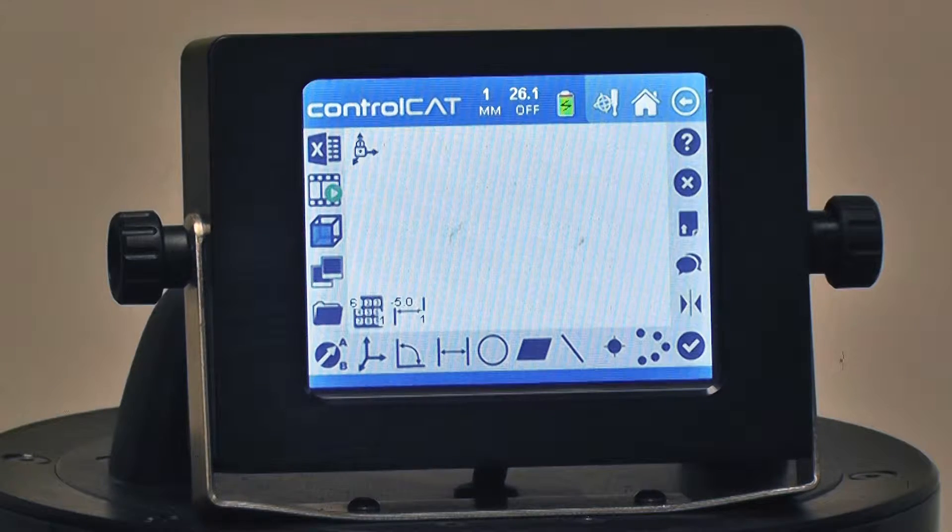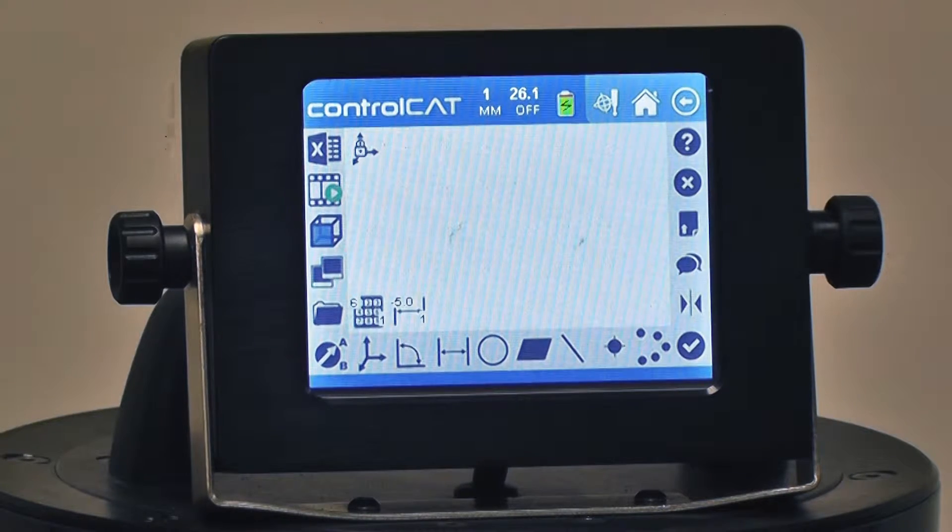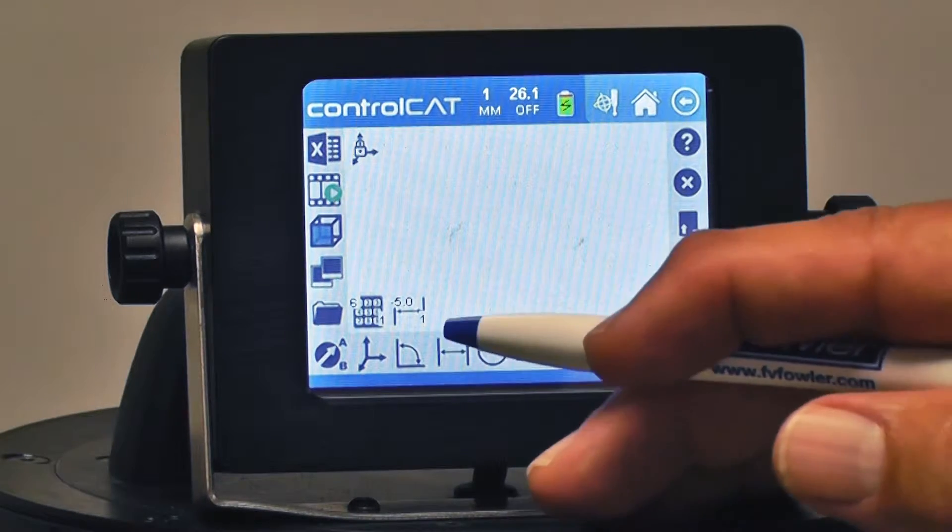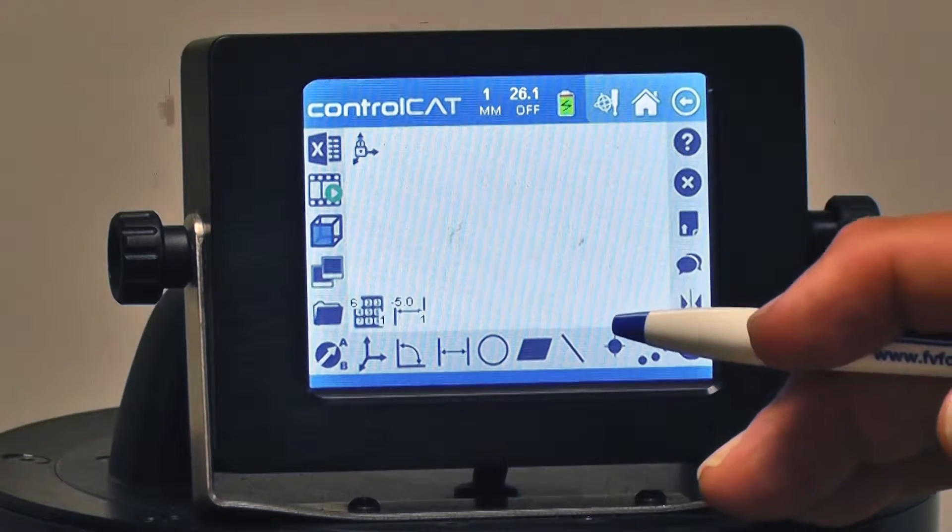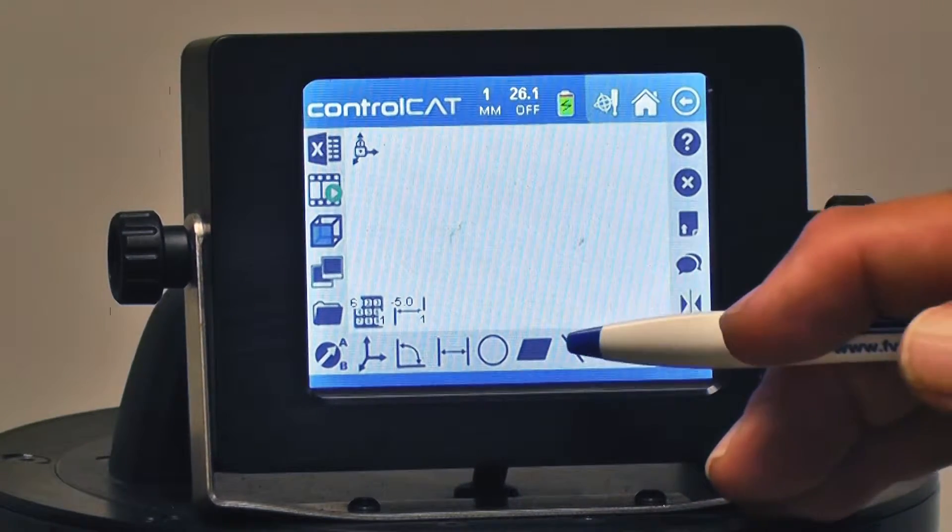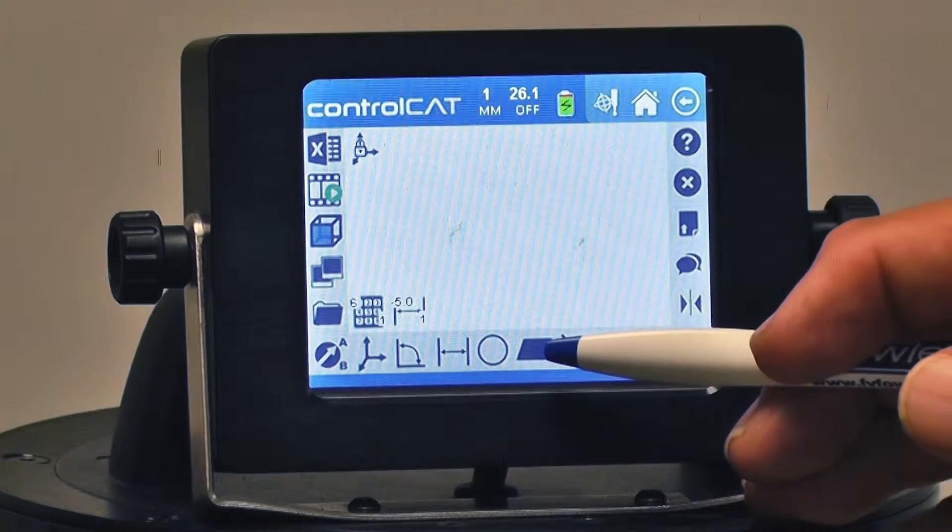So now I'm going to start taking measurements using ControlCAT. Typically I will start with measuring a plane, which is very easy on a lot of parts. To measure a plane or any other dimension, I tap on that icon and hit the enter key.